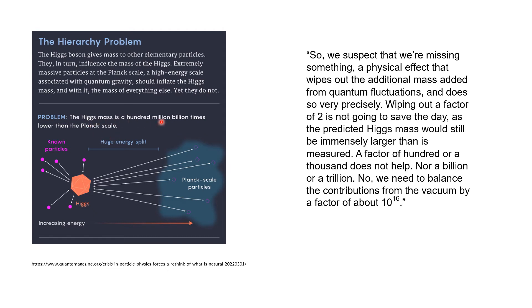So the Higgs mass is a hundred million billion times lower than the Planck scale, which is where the mass would have been expected to be.